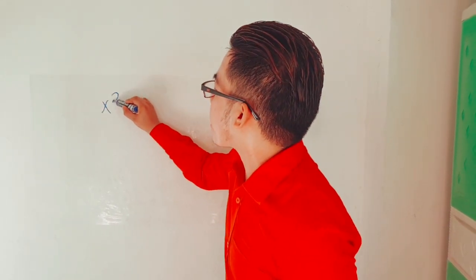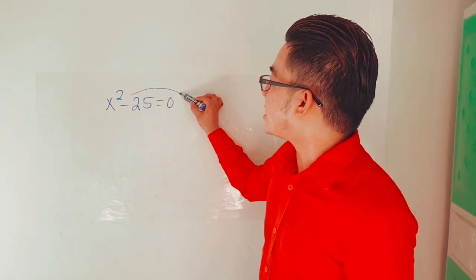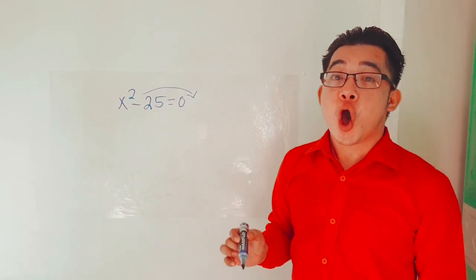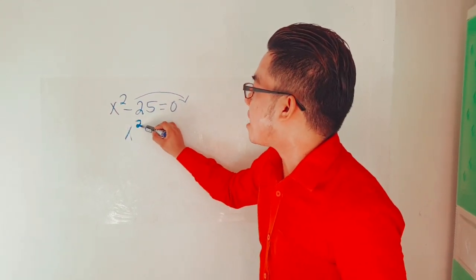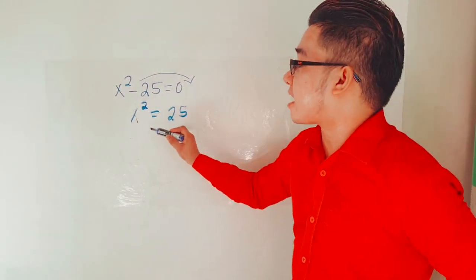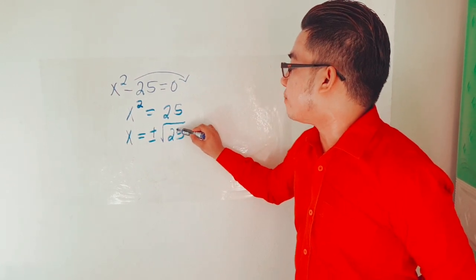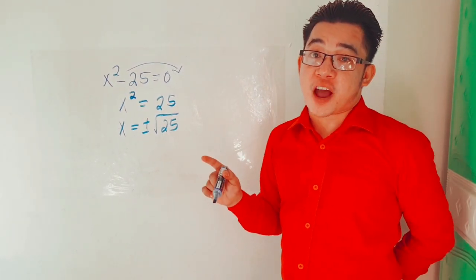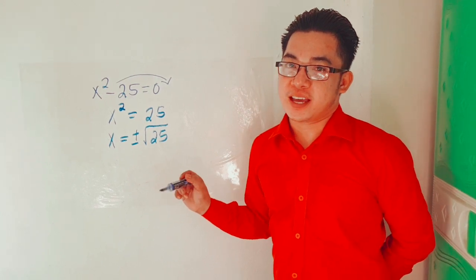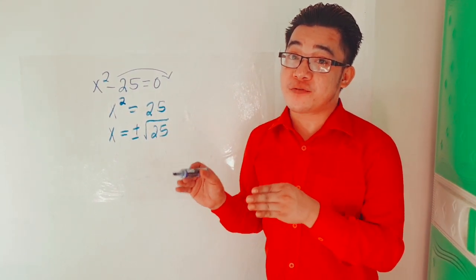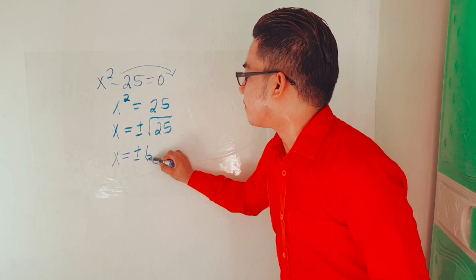Example number 1: x squared minus 25 is equal to 0. The first thing you need to do is to transpose negative 25 to the other side. Always remember that in transposing, do not forget to change the sign. So we will have x squared is equal to 25. Then, extract square roots. We have x is equal to positive and negative square root of 25. To get the square root of 25, think of a number that when multiplied by itself gives 25 — that is 5, because 5 times 5 is 25. Therefore, x is equal to positive and negative 5.